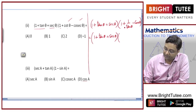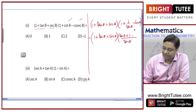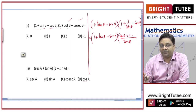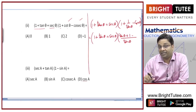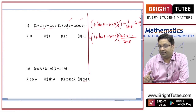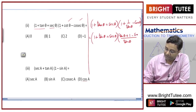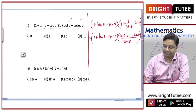Now, tan θ times cosecant θ equals (sin θ/cos θ) times (one/sin θ) — sine cancels, giving secant θ. So the second bracket becomes (tan θ + one − secant θ) divided by tan θ.